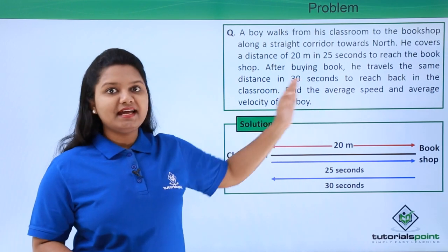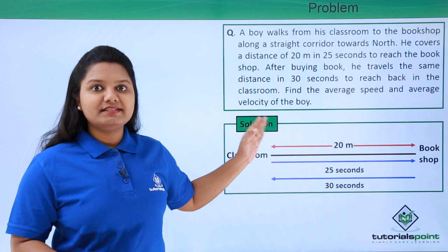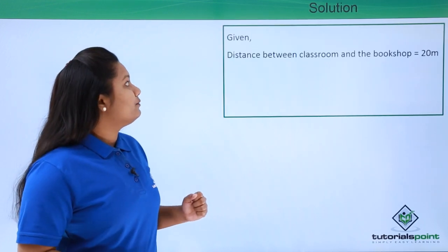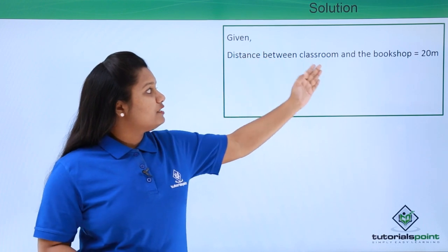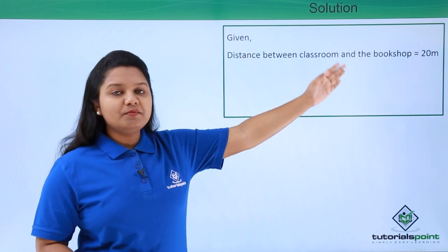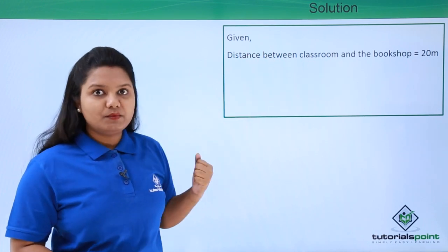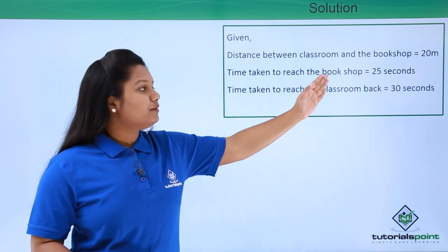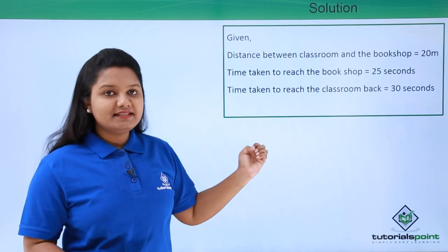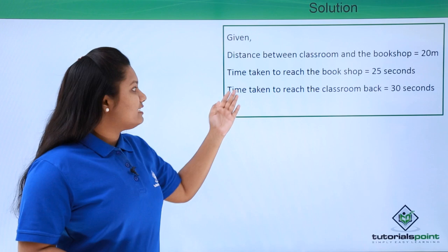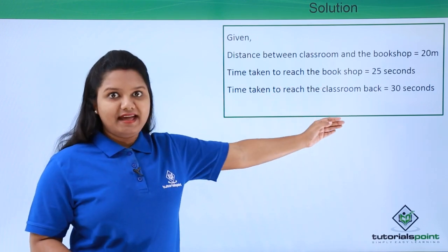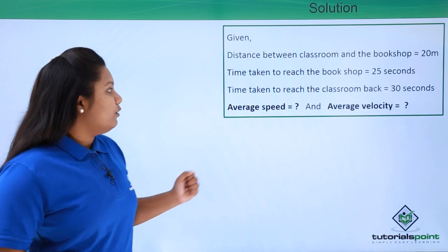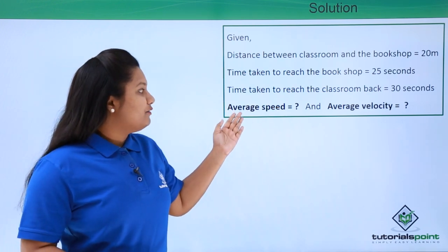In this situation we are supposed to find the average speed and average velocity of the boy. We know that the distance between the classroom and the bookshop is 20 meters, as given in the question. The time taken to reach the bookshop was 25 seconds, and the time taken to reach the classroom back was 30 seconds.